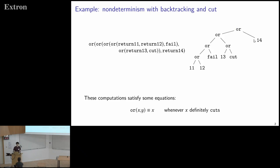This talk is about computational effects. Starting with an example: non-determinism with a cut operator. A computation either returns some results, makes a choice between two computations, fails to produce a result (nullary non-deterministic choice), or it will cut.